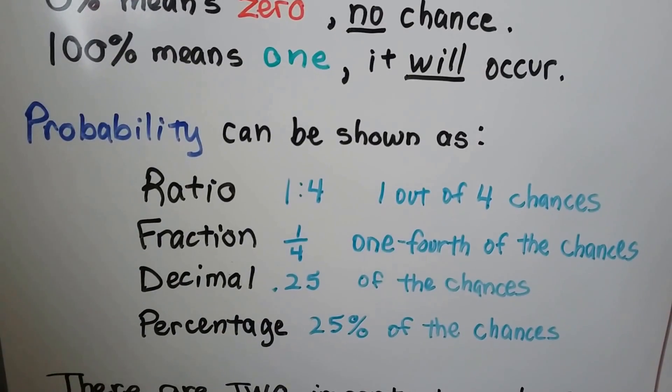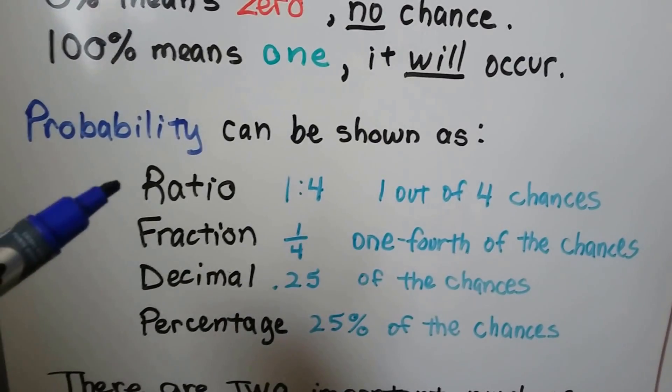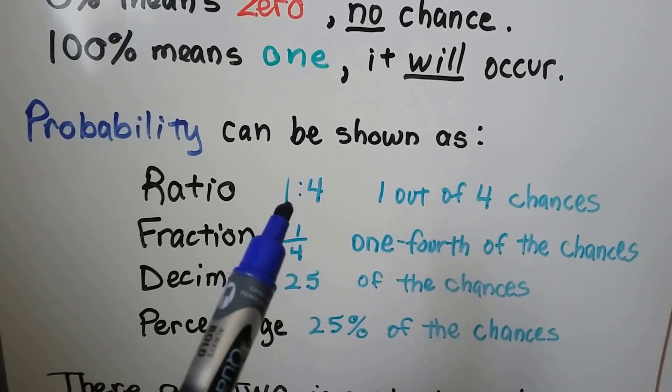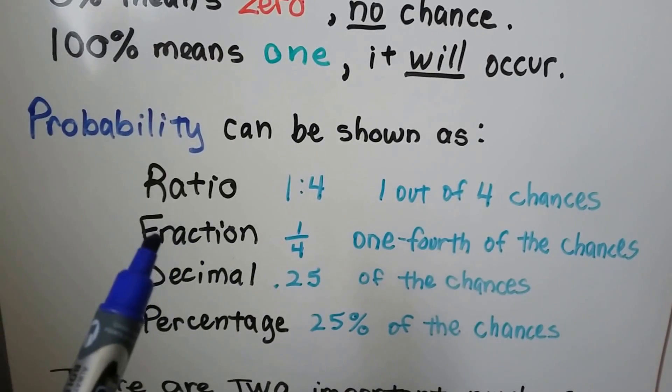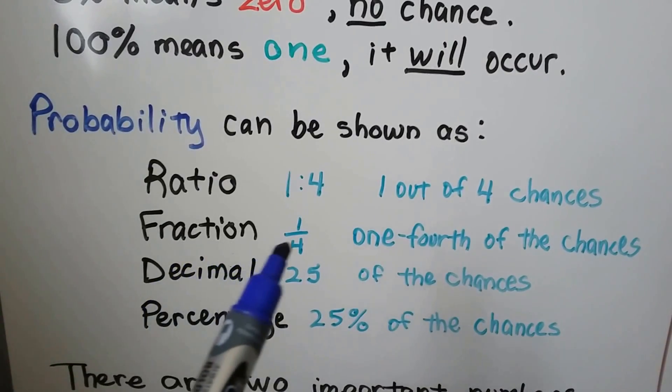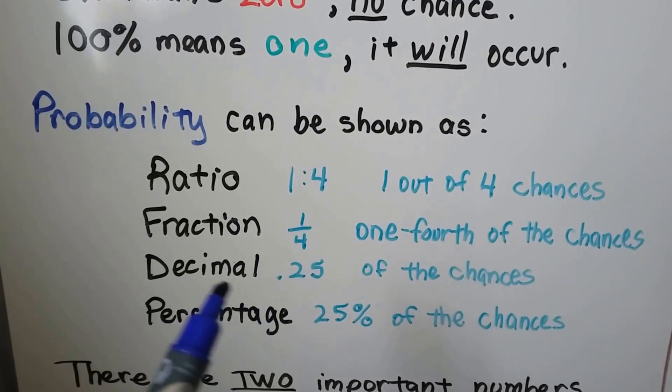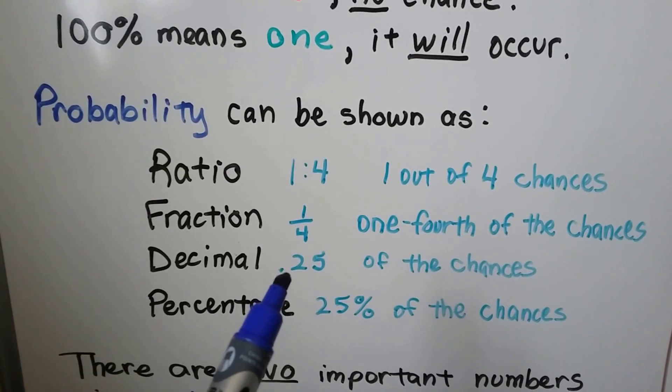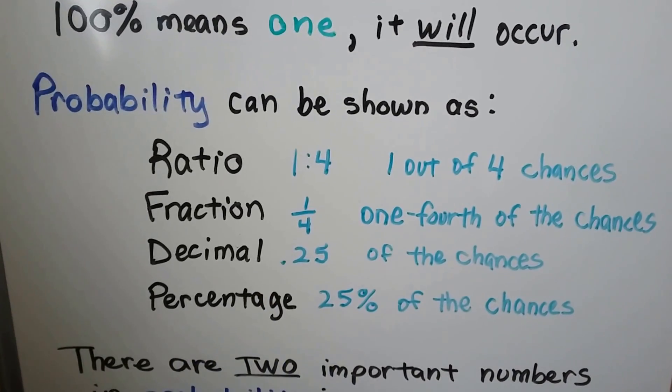And it can be shown as a ratio, a fraction, a decimal, or a percentage. As a ratio, we would use a colon. It's 1 to 4, a 1 out of 4 chance that it'll happen. And as a fraction, that would be 1 fourth. As a decimal, 1 fourth would be 0.25. And as a percentage, it would be 25%.